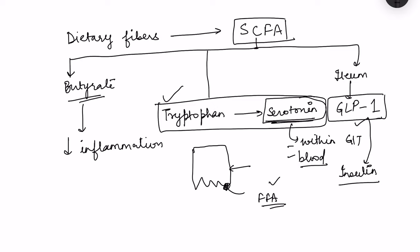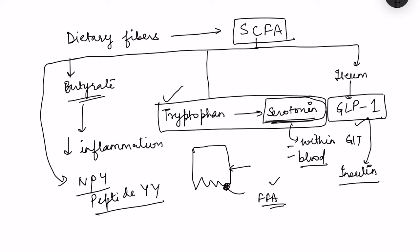Other neuropeptides are also released: neuropeptide Y, which stimulates food intake, and peptide YY, which decreases appetite. These neuropeptides are released by enteroendocrine cells of the GI tract depending on the products present, and it is the gut microbiome that drives this by converting dietary fibers into short chain fatty acids.